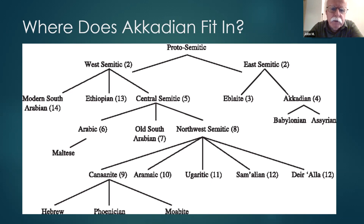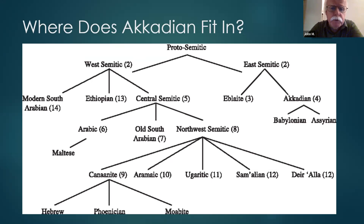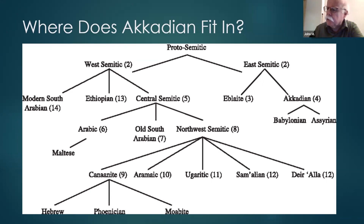So there's evidence of what linguists call contact phenomena: Sumerian and Akkadian were mixed up for many centuries, spoken by the same people, and they just had influences on each other. Sumerian, in the end, was the loser — it just died out as a common language.